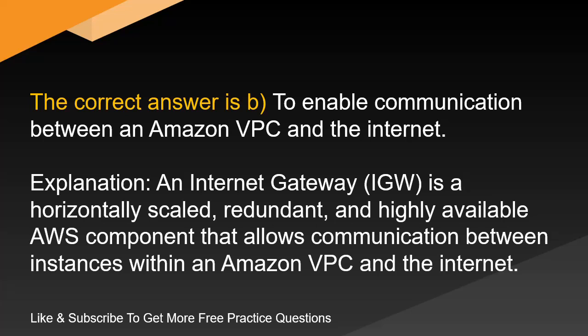Explanation. An Internet Gateway, IGW, is a horizontally scaled, redundant, and highly available AWS component that allows communication between instances within an Amazon VPC and the Internet.